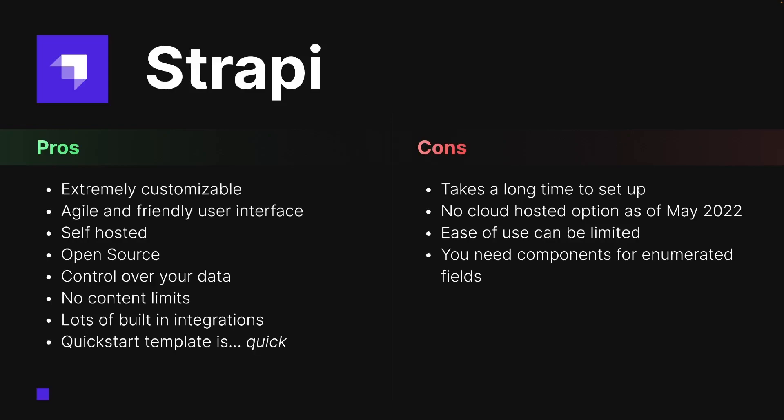If you don't need all of those things, Strapi provides a quick start template that can get you up and running quite easily. One of the bigger cons of Strapi is that it takes a little bit longer to set up because you actually need to host your own server. I wish there was a cloud hosting option — I just needed something pretty simple and straightforward to set up — but there isn't one as of May 2022, though they do say it is coming soon.